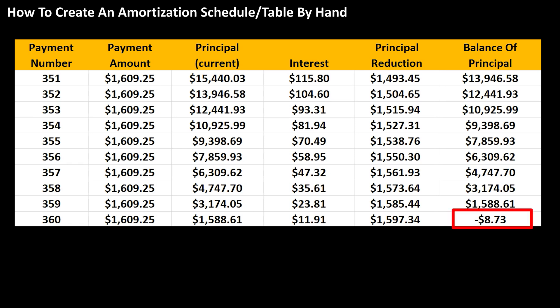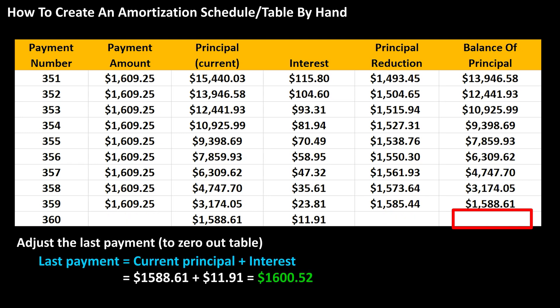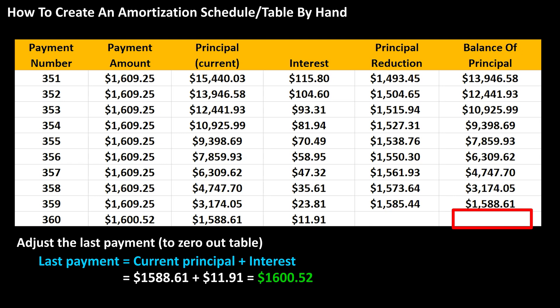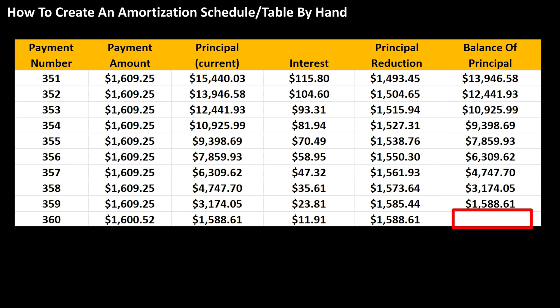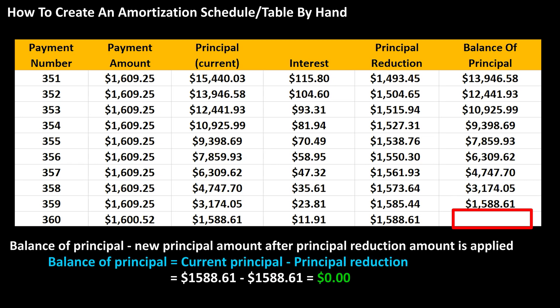The table actually goes past zero for the balance of principal in the last column, as it doesn't always work out to zero. So we adjust the last payment: it will be $1,588.61 — the current principal — plus $11.91 of interest, which equals $1,600.52. The adjusted principal reduction is $1,600.52 minus $11.91, which equals $1,588.61. And the new balance of principal is $1,588.61 minus $1,588.61, which equals zero. Our amortization table is complete.